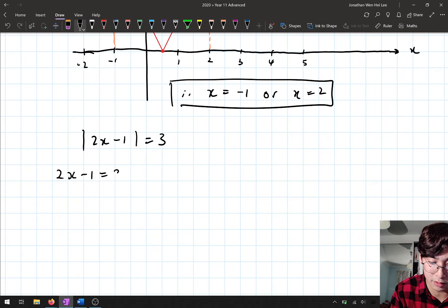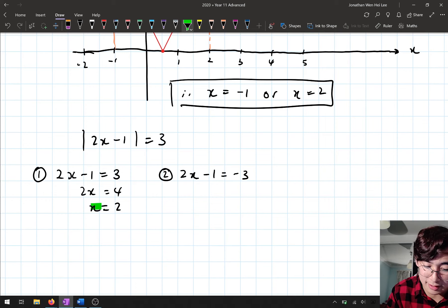So let's look at those two cases: 2x - 1 = 3, and 2x - 1 = −3. I'm just doing this quickly down underneath. Let's just write one and two just to make it clear. So I've got 2x = 4. So x = 2, which matches up with my second solution that I have here. Perfect.